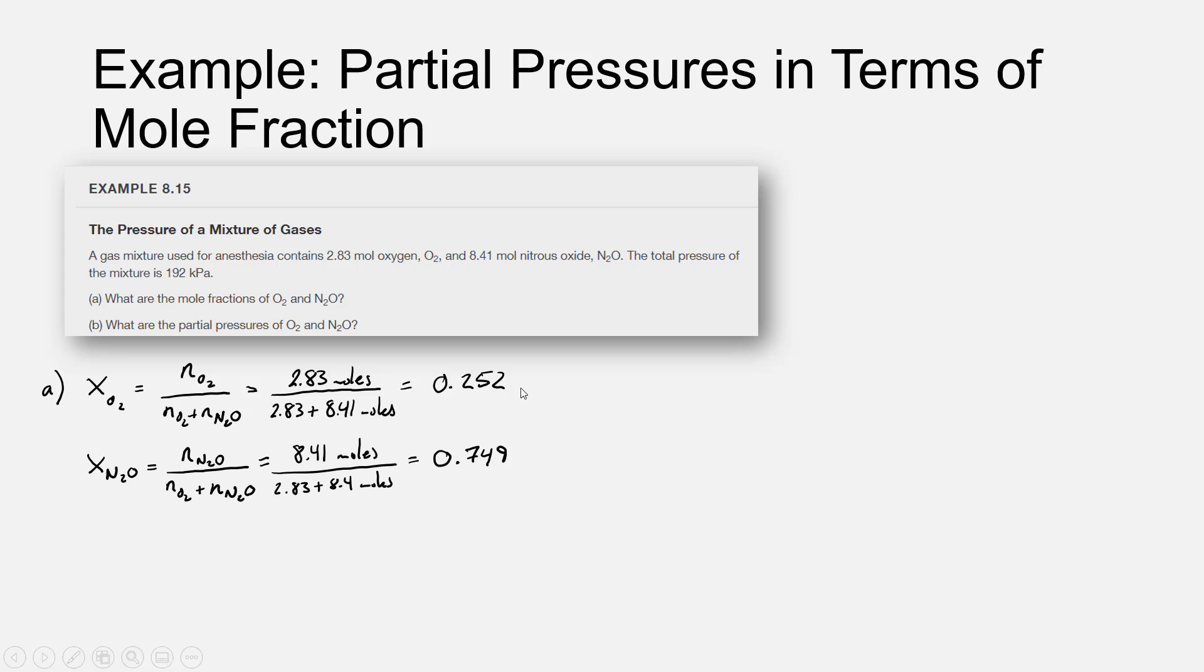The mole fraction of N2O, moles of N2O divided by moles of oxygen plus moles of N2O is 8.41 divided again by 2.83 plus 8.41 gives us a mole fraction of 0.749 for the N2O. So these are our mole fractions of our two components, and that's our final answer to part A.